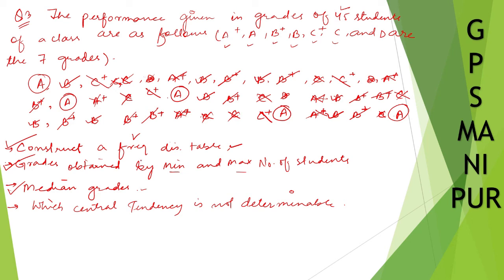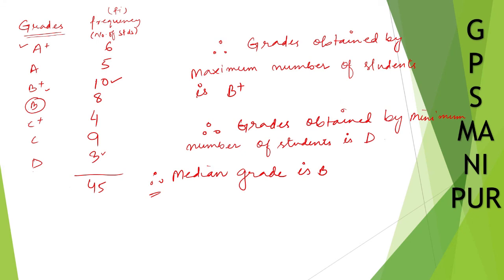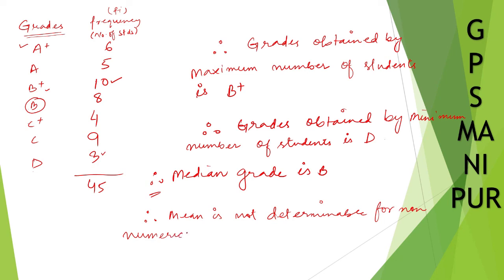Now, which central tendency is not determinable? For non-numerical data, we cannot find the mean. So mean is not determinable for non-numerical data. We can find the mode — the grade obtained by the maximum number of students is the mode — and we have found the median. But we cannot find the mean because we don't know how to add all these grades. I hope you understood this question, thank you.